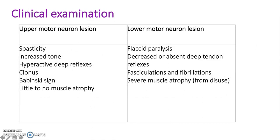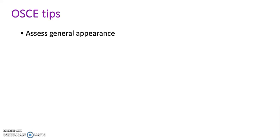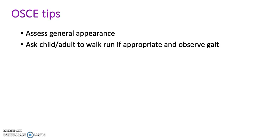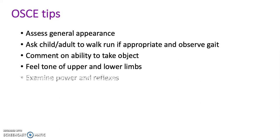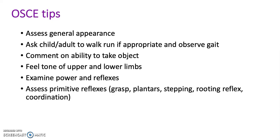On clinical examination, if the patient has an upper motor neuron lesion you will see increased spasticity, increased tone, hyperactive deep reflexes, clonus, Babinski sign and little to no muscle atrophy. However, if they have a lower motor neuron lesion, you can see flaccid paralysis, decreased or absent deep tendon reflexes, fasciculations and fibrillations, and severe muscle atrophy from disuse. Assess the general appearance of the patient; ask the child or adult to walk or run if appropriate and observe their gait; comment on the ability to take an object; feel the tone of the upper and lower limbs; examine the power in reflexes; assess primitive reflexes such as grasp, plantar, stepping and rooting reflexes and coordination; and note any involuntary movements.